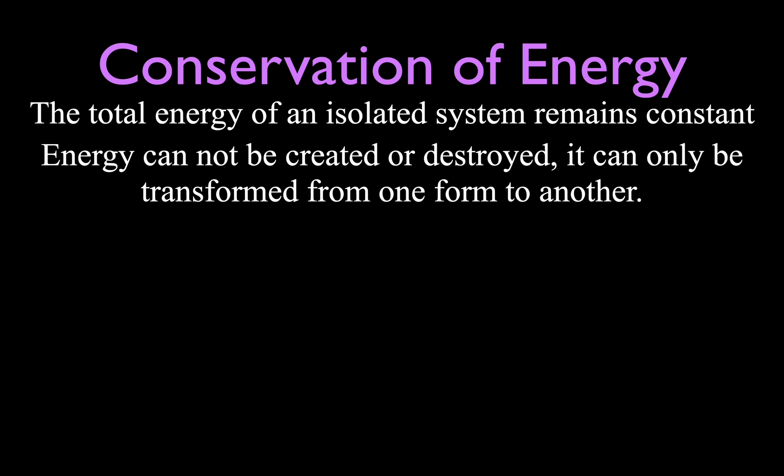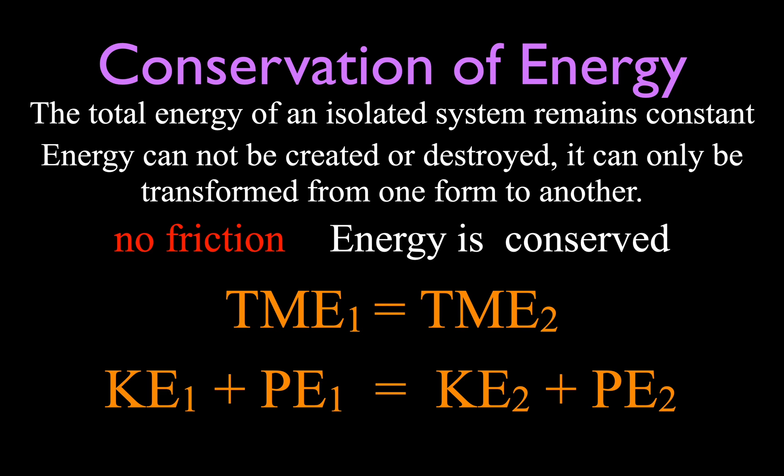In this simulation, we're going to start out by saying there's no friction for the skater, and therefore energy is conserved. The total mechanical energy of the skater at any one point on the skating track is equal to the total mechanical energy at any other point — the sum of kinetic and potential at one location equals the sum at another.